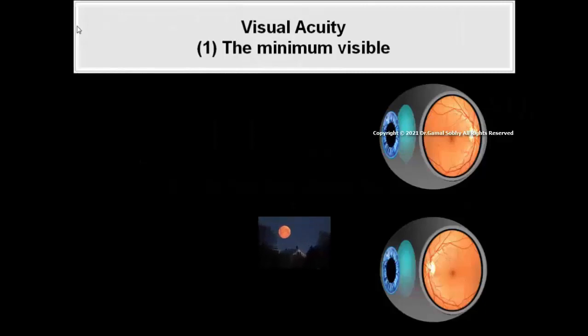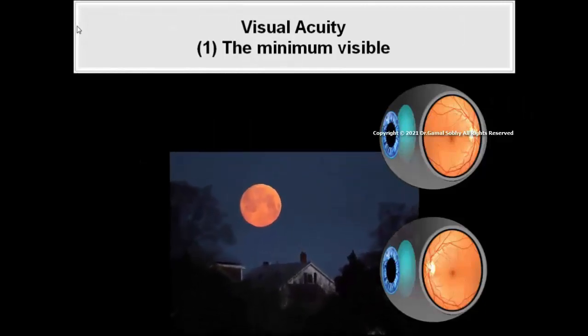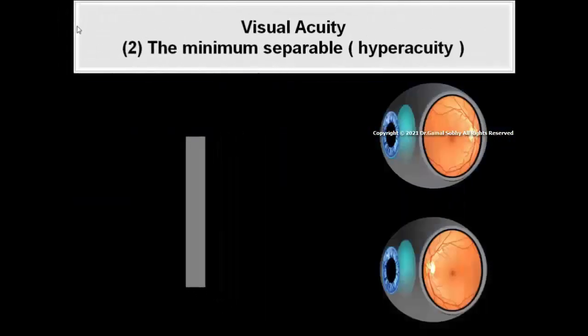Visual acuity is a highly complex function that consists of: 1. The minimum visible is concerned with detection of the presence or absence of a visual stimulus.